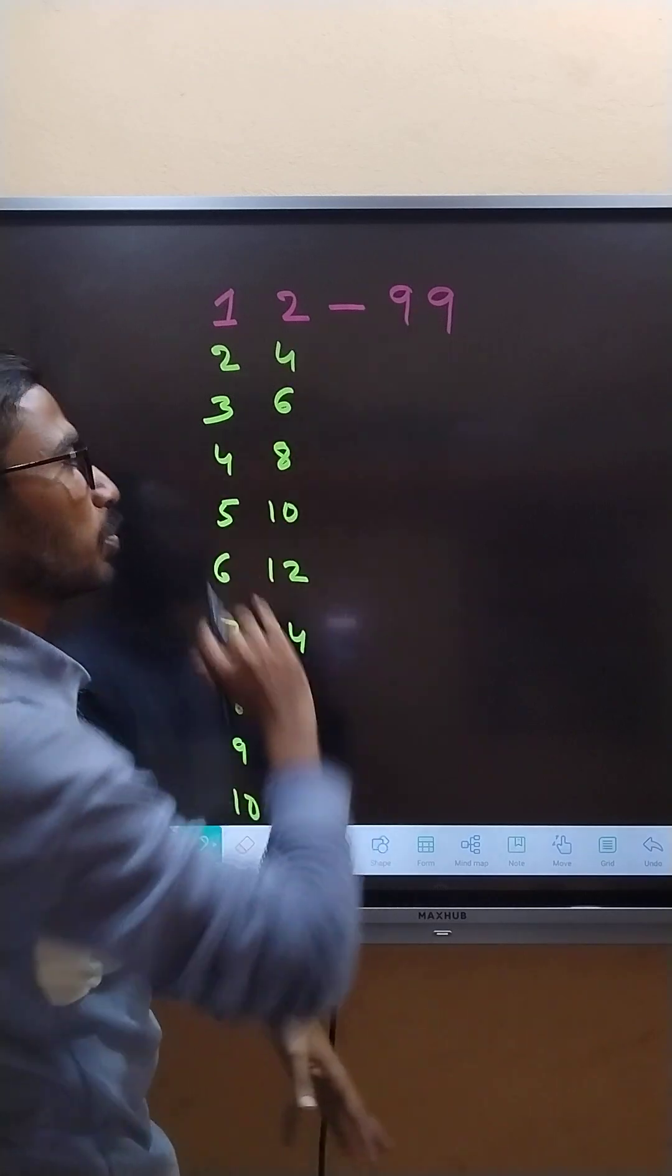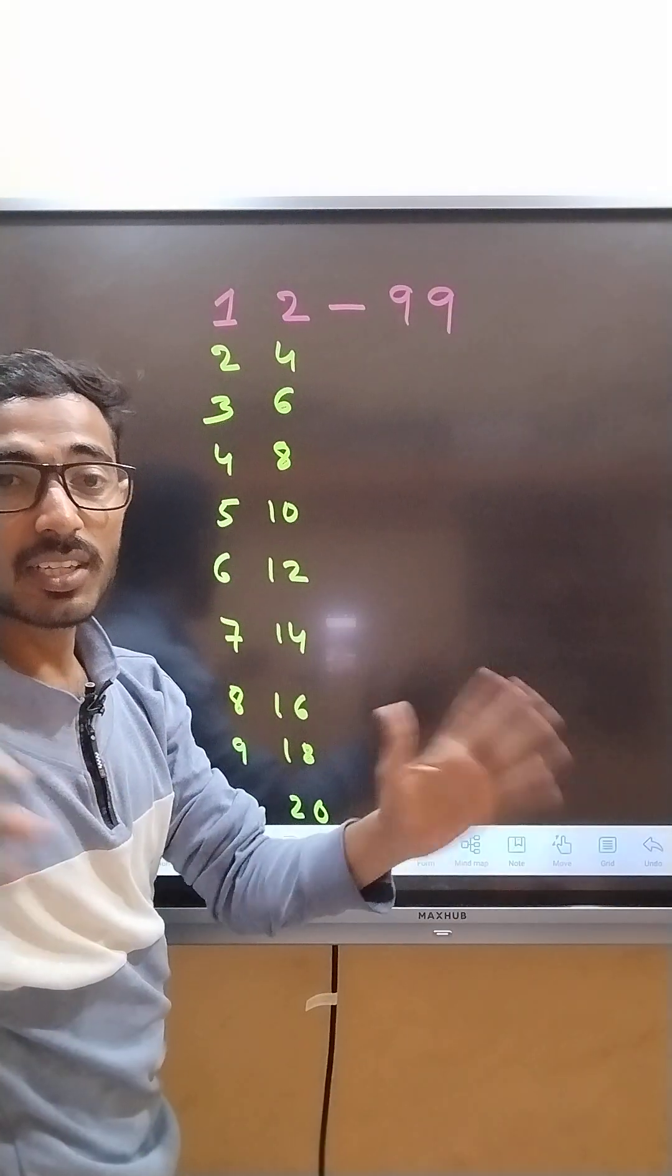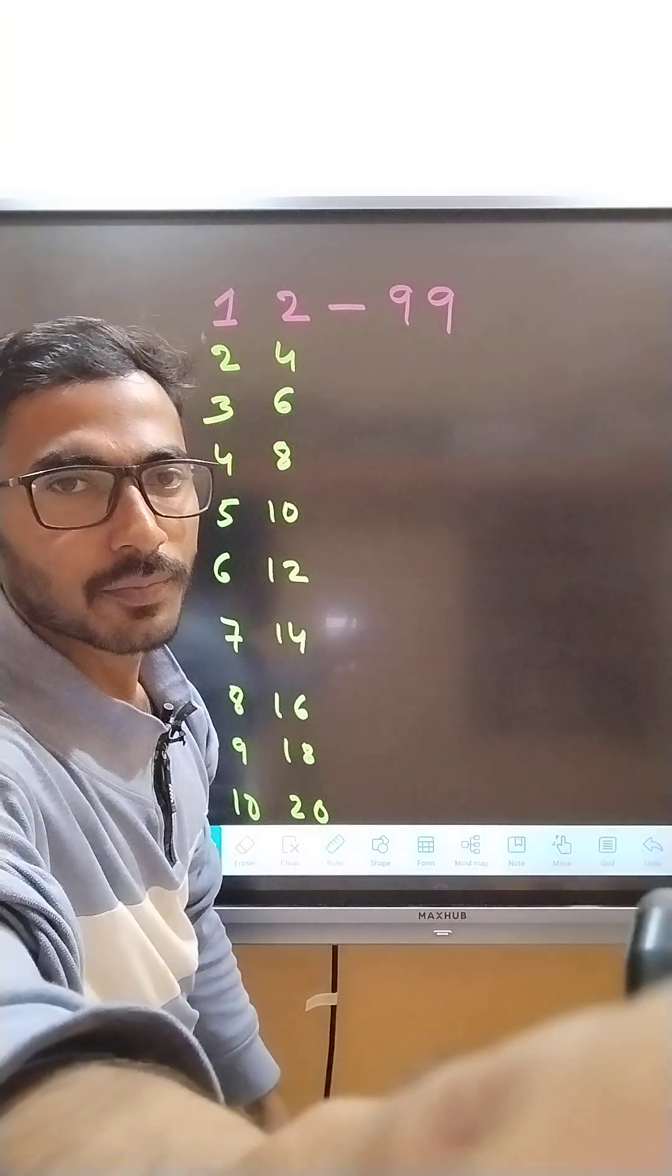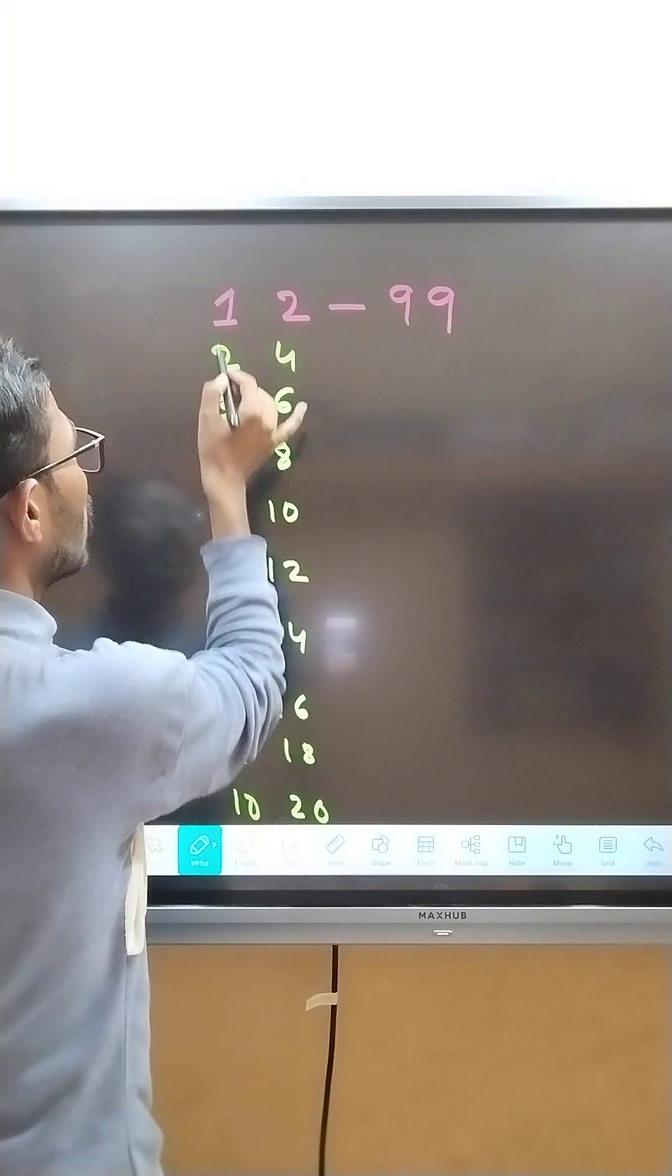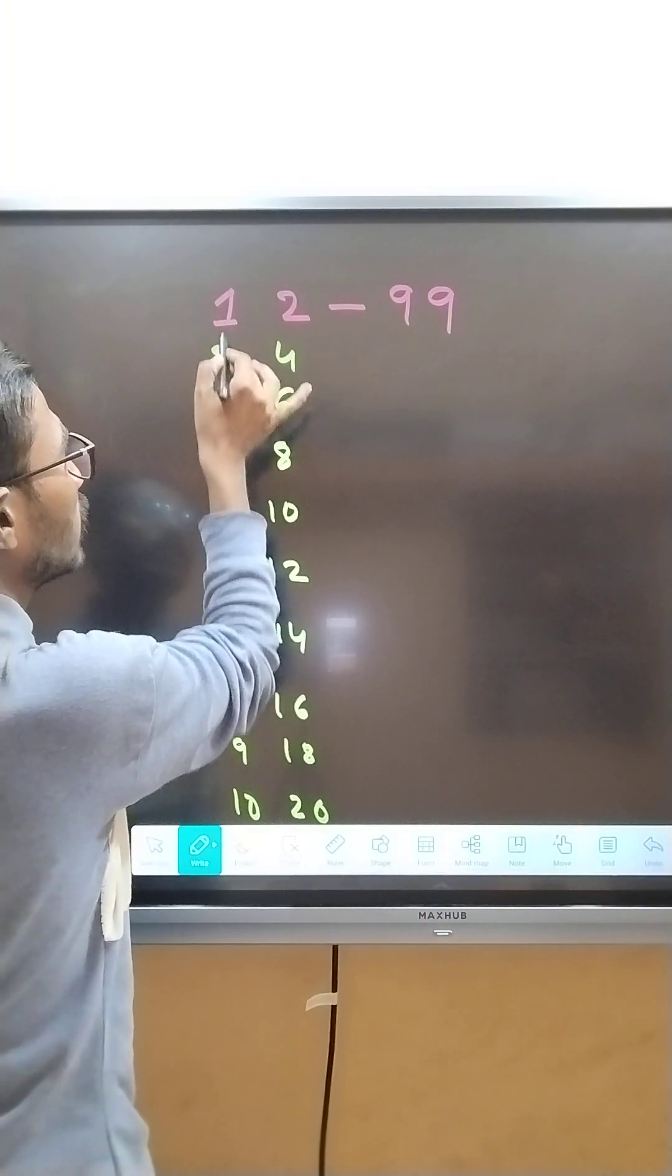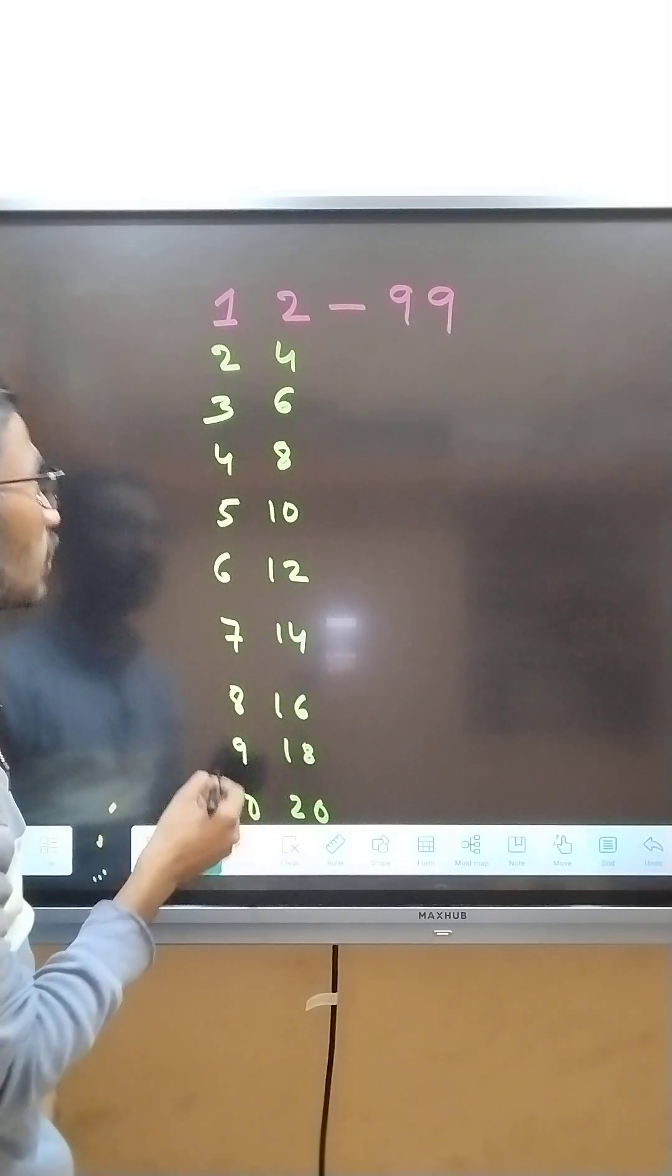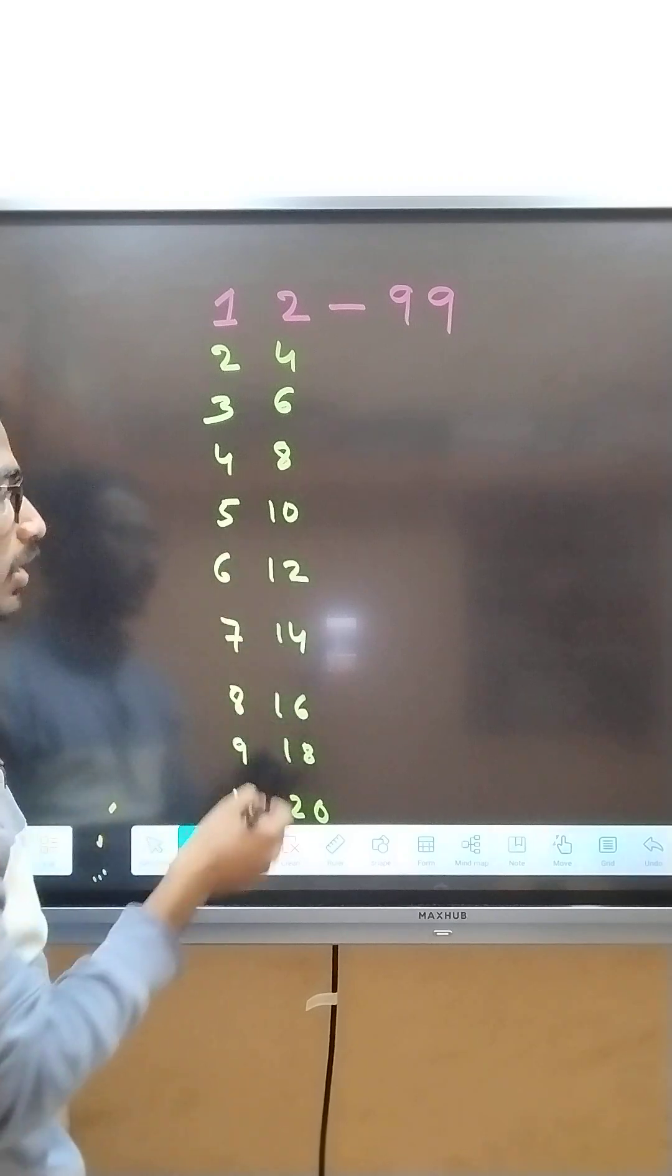See, if we start from 92 to 99, we get 92, 93, 94, 95, 96, 97, 98, 99. That's it.